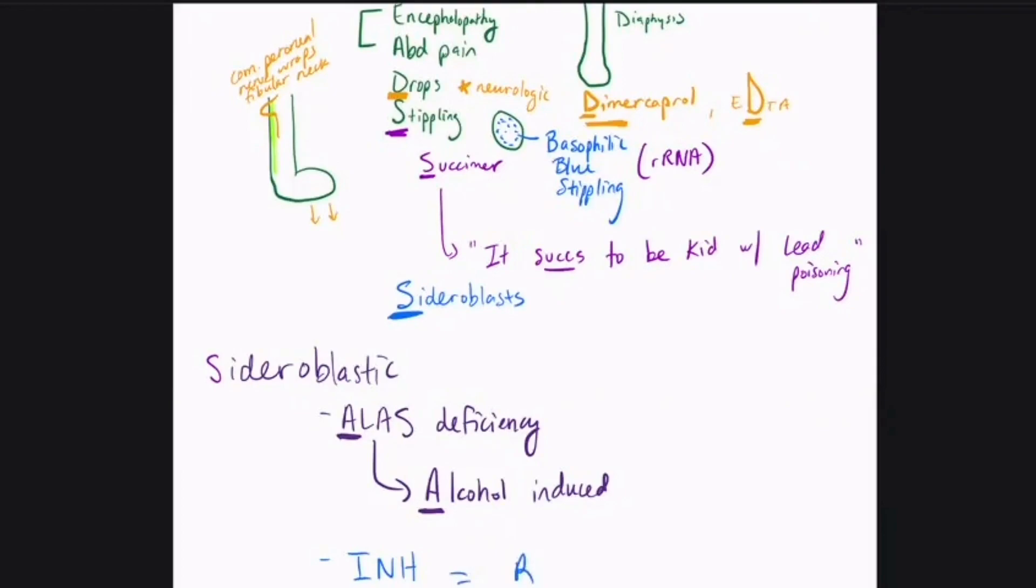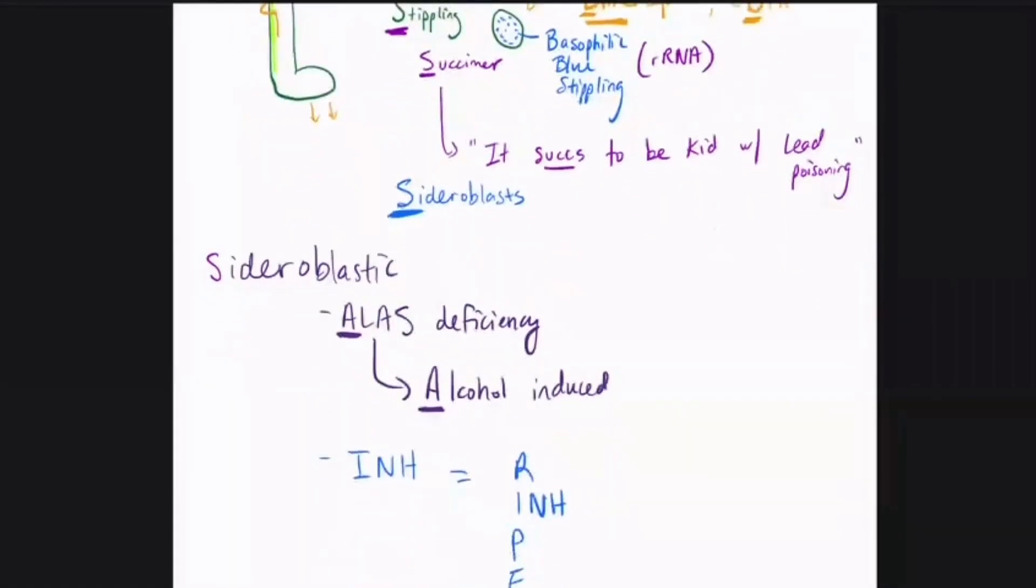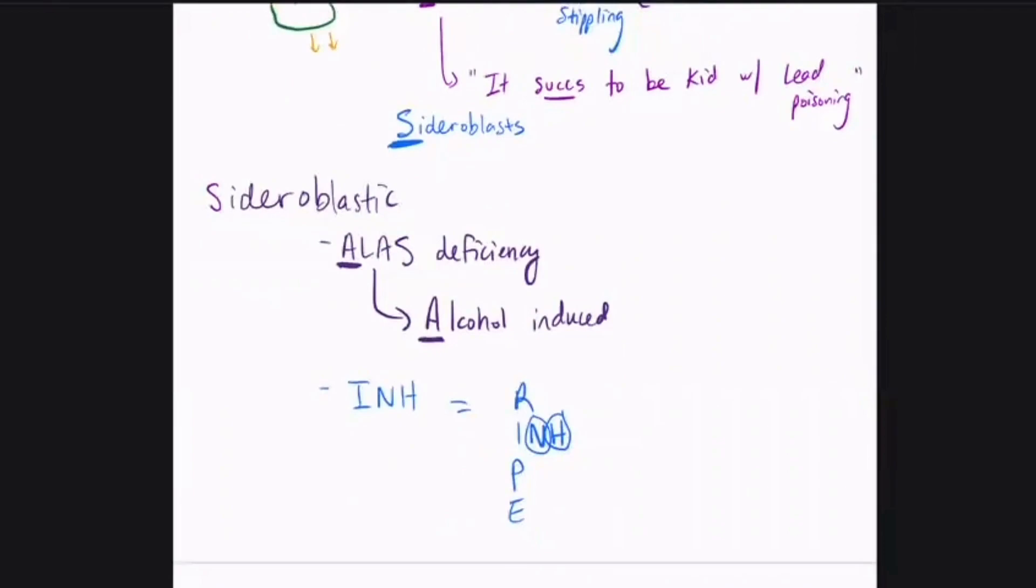INH stands for isoniazid. So what are the side effects of isoniazid? The N in the abbreviation stands for neuropathic symptoms and then the H stands for hepatitis. So you can basically use the abbreviation for the medication as the mnemonic for figuring out what is actually going on.